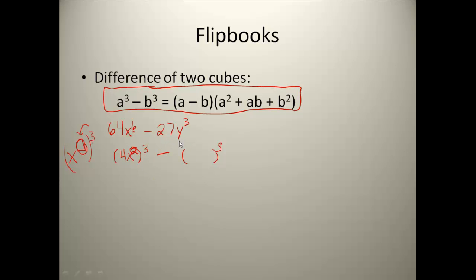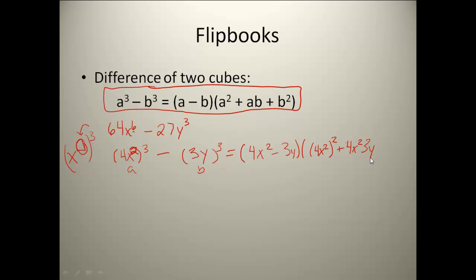Then I go over to 27y³. I look at my cheat sheet to figure out what I can cube to get 27 — that would be 3. And what I cube to get y³ — that would be y. So now I've got my a to be 4x² and my b is 3y. I follow the pattern from the formula: it says I take (a - b), so I have (4x² - 3y). Then I take a², so I'll have (4x²)², plus a times b which is 4x² times 3y, plus b squared which is (3y)². I put a and b in parentheses when squaring them to make sure I don't make any mistakes when I simplify.